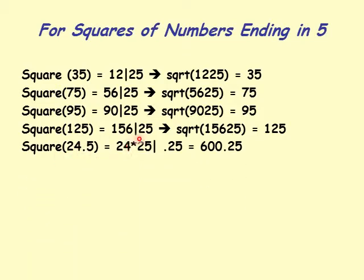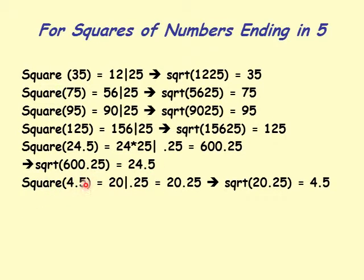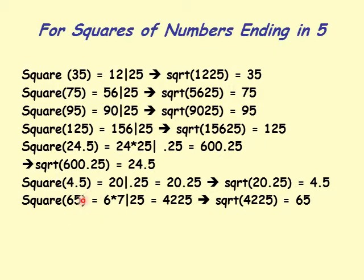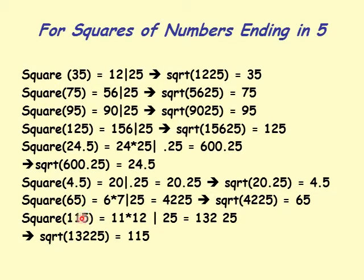Square of 24.5: 24 times 25 on the left, and .25 on the right, giving 600.25. So square root of 600.25 is 24.5. Square root of 4.5 is 20.25, so square root of 20.25 is 4.5. Square of 6.5 is 42.25, and square root of 42.25 is 6.5 — we see 25 on the right and 42 on the left equals 6 times 7. For 115: square is 13225, since 11 times 12 equals 132, and 25 on the right, so square root of 13225 is 115.